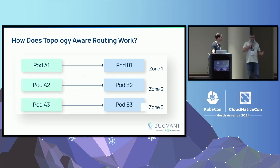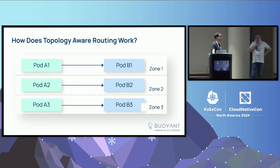When we enable topology-aware routing, we hard-wire those connections. We've got connection-based routing, traffic stays in zone — pretty straightforward. If you've got things balanced, it works really great.